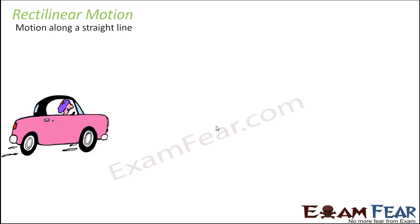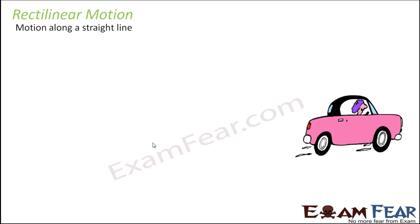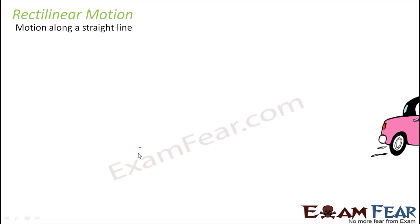Rectilinear motion is about motion along a straight line. When an object moves along a straight line — as you can see here, this car is moving along a straight path — so when a car is moving on a highway, that is a straight path with no turns. That is rectilinear motion, often also known as linear motion. Linear means something which lies on the same line.